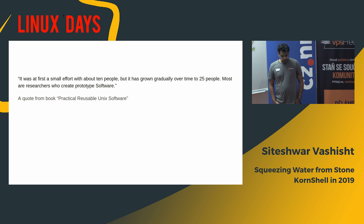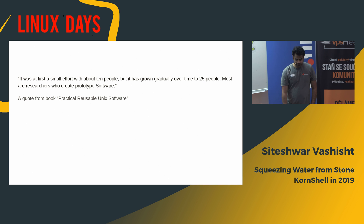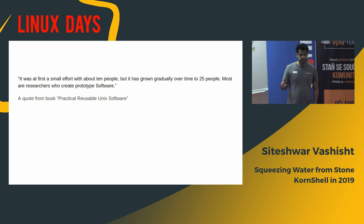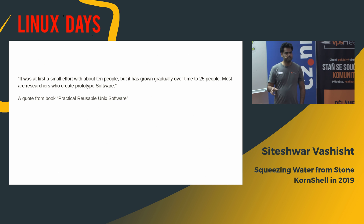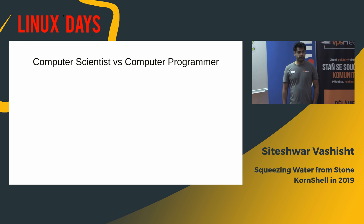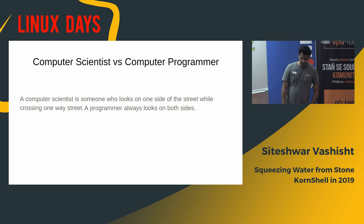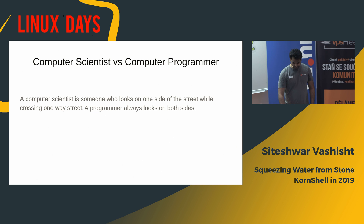This is a quote from the book 'Practically Reusable Unix Software', released in the mid-90s around 1994–95, which talks about the AST codebase we took over. It says: 'It was at first a small effort with about 10 people, but it has grown gradually over time to 25 people — most are researchers who create prototype software.' There are two key takeaways: first, there were 25 people working on this codebase — these days it's just two, which is why we dropped most of the code. Second, the people writing this code were researchers, not programmers. A computer scientist looks on one side of the street while crossing a one-way street; the programmer always looks on both sides. Good programmers care about verification.